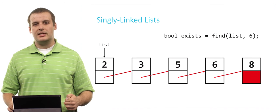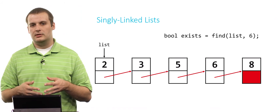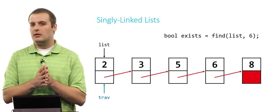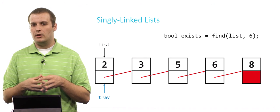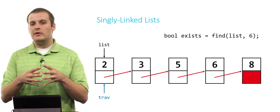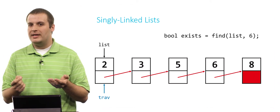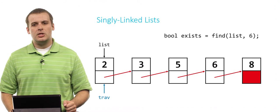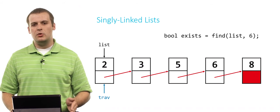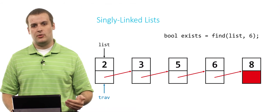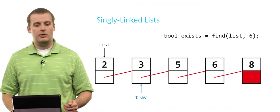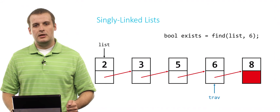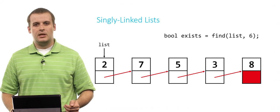Here's an example of a singly linked list consisting of five nodes, with a pointer called list to the head. We create a traversal pointer — notice I didn't malloc any space for trav, because that node already exists in memory. I just have two pointers pointing to the same thing. Is 2 what I'm looking for? No. So I move to the next one — trav equals trav next. Is 3 what I'm looking for? No. We continue until we get to 6, which is what we're looking for, and we're done.